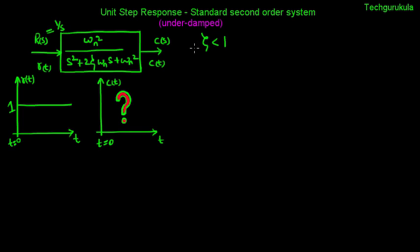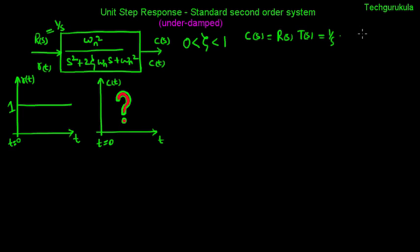We're taking zeta to be definitely greater than 0. Finding C of s is straightforward compared to C of t. C of s can be written as R of s times the transfer function T of s, where R of s is 1 over s and T of s is given in the box representing the standard second order system.